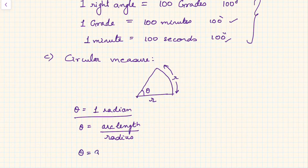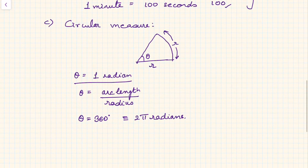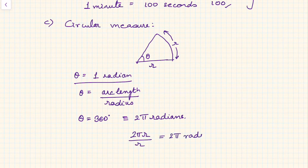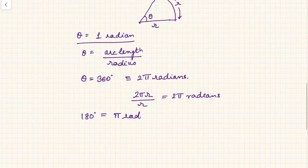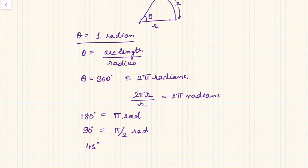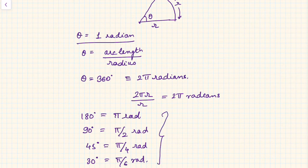We know that when theta equals 360 degrees, this is equivalent to 2π radians. When the angle subtended at the center is 360 degrees, the arc length is 2πr — the whole circumference — divided by r, giving 2π radians. Similarly, 180 degrees equals π radians, 90 degrees equals π/2 radians, 45 degrees equals π/4 radians, and 30 degrees equals π/6 radians. Please become familiar with circular measure, as higher-level literature is based on radians.